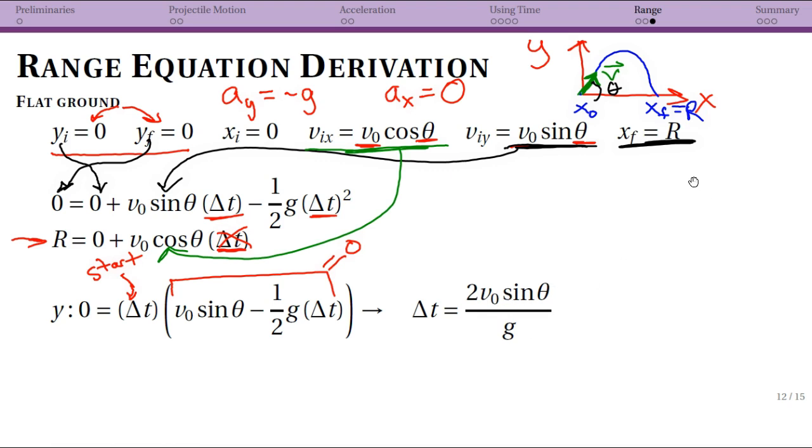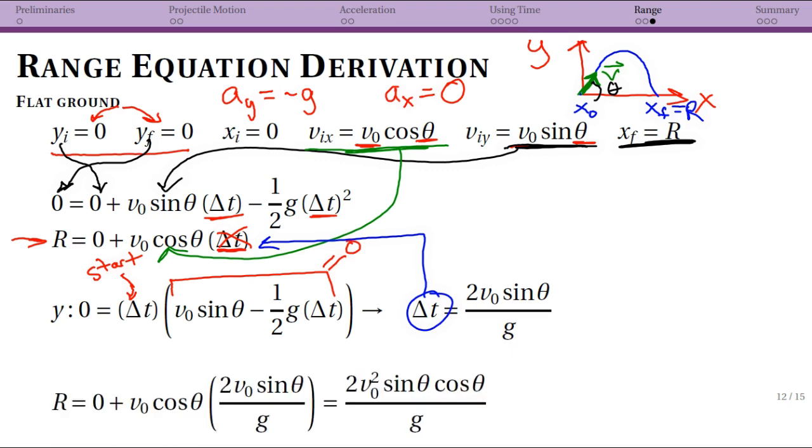So now again what we're doing is taking this delta t and plugging it into the x equation since that was our equation for the range, but we couldn't have delta t in it. So now I come back to that range equation, and this first term 0 so obviously you can drop that. Now you need to actually keep those terms here.